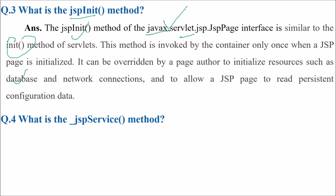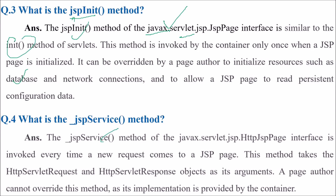JSP init is done first, then JSP service. So what is JSP service? You will find it in javax.Servlet.JSP, and this HTTP JSP service interface is invoked every time a new request comes to a JSP page. This method takes the HTTP servlet request and HTTP servlet response objects as its arguments, but the page author can override this method — its implementation is provided by the container.